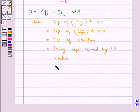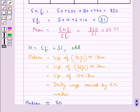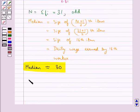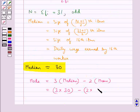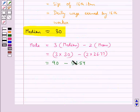We now have mean = 26.77 and median = 30. The empirical formula for mode is: mode = 3 × median − 2 × mean. So mode = 3 × 30 − 2 × 26.77 = 90 − 53.54 = 36.46.